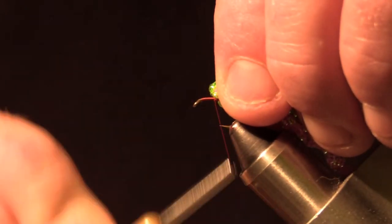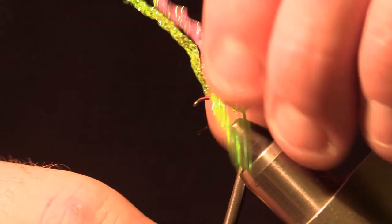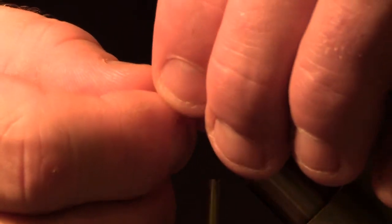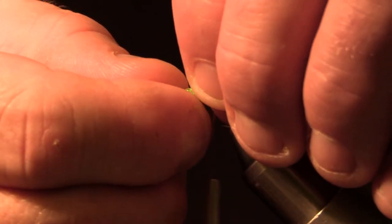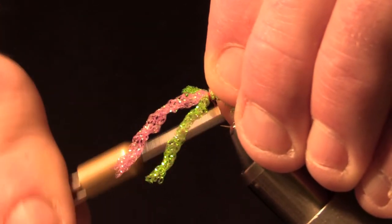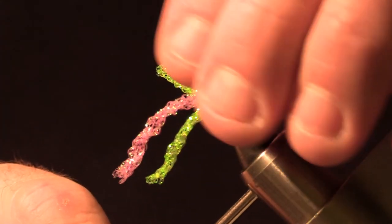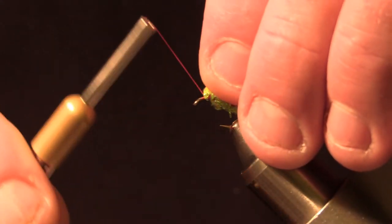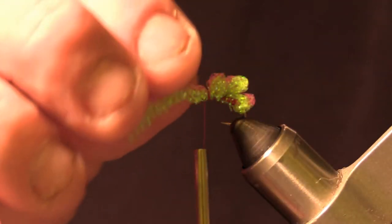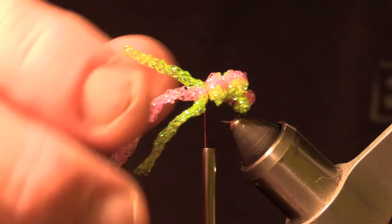Do the same. Do one more loop. Wrap in front. And when you trim it out, you trim it out at an angle.